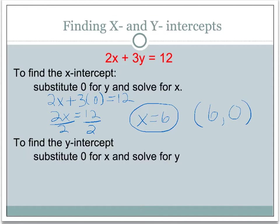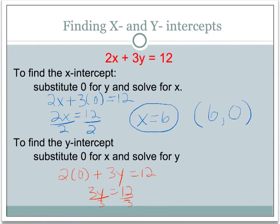Now similarly, if you want to find the y-intercept, you basically just do the opposite. You're going to substitute 0 in for the x this time and then solve for y. So we would put in 0 for x: 2 times 0 plus 3y is equal to 12. When we solve for y, we end up with 3y equals 12, and dividing by 3, y is equal to 4. That's your y-intercept, and the ordered pair where it crosses the y-axis would be 0, 4.